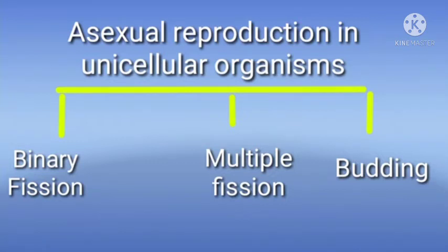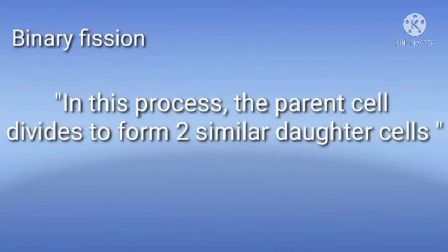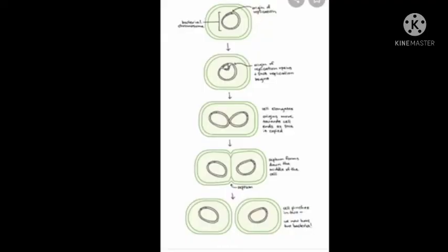Next topic is binary fission. Binary fission - in this process, the parent cell is divided to form two similar daughter cells. Asexual reproduction is divided into two parts. Yes, from one cell, two cells are being formed. Here, look at the image. In this particular image, you can see a complete one cell is being divided.